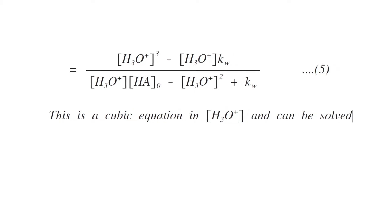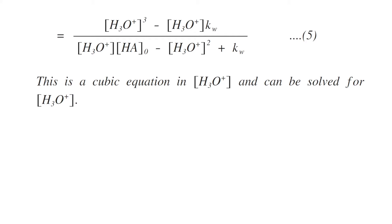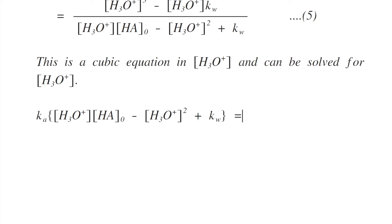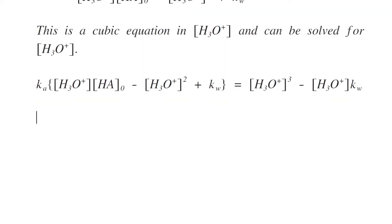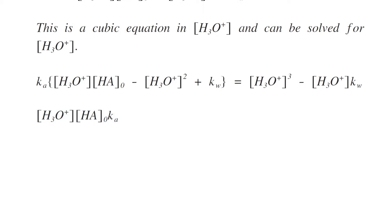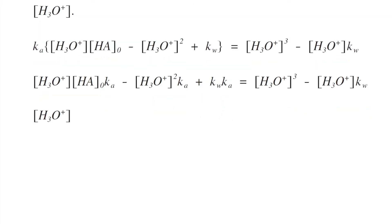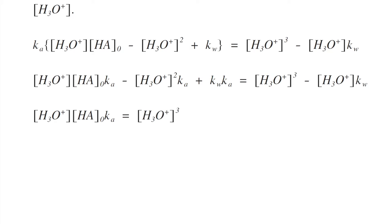This is a cubic equation in [H₃O⁺] and can be solved for [H₃O⁺]. Rearranging and expanding, Ka·[H₃O⁺]·C₀ − Ka·[H₃O⁺]² + Ka·Kw = [H₃O⁺]³ − [H₃O⁺]·Kw. Taking all terms to one side: [H₃O⁺]·Ka·C₀ = [H₃O⁺]³ − [H₃O⁺]·Kw + Ka·[H₃O⁺]² − Ka·Kw.